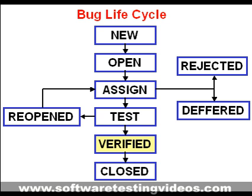Once the bug is fixed and the status is changed to test, the tester tests the bug. If the bug is not present in the software, he approves that the bug is fixed and changes the state to verified. If the bug still exists even after the developer has fixed it, the tester changes the status to reopened, and the bug traverses the life cycle once again.